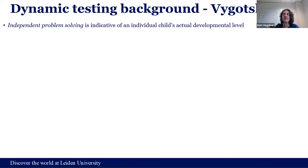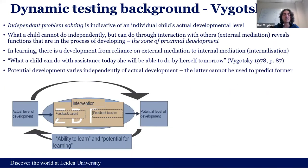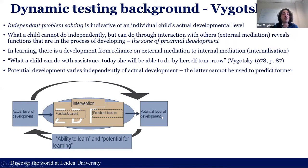The zone of proximal development consists of, on the one hand, independent problem solving — that is the level of problem solving that the child has reached independently, the actual developmental level. On the other hand, there's also the proximal or potential level of development — that which a child can achieve after getting help from an expert, a more knowledgeable other, as Vygotsky says. So learning takes place within this zone, and children move from the actual level of development to the potential level of development when given help by others.